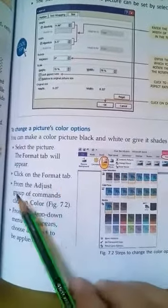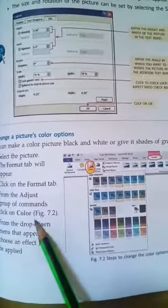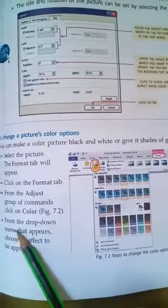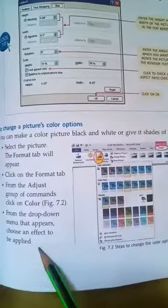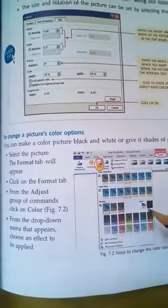Click on the Format tab. From the Adjust group of commands, click on Color (Figure 7.2). From the drop-down menu that appears, choose an effect to be applied.